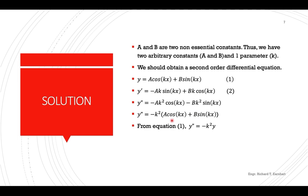We factor out negative k squared to get negative k squared times (a cosine(kx) plus b sine(kx)). This expression is equal to the original equation y, so we replace it by y. This gives the required differential equation y double prime equals negative k squared times y, eliminating a and b while retaining the parameter k.